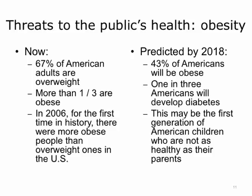Obesity is soon climbing to be a close second. Currently, 67 percent of American adults are overweight. More than one-third are obese. In 2006, for the first time in history there were more obese people than overweight people in the United States. Predicted by 2018, if nothing has changed, 43 percent of Americans will become obese. One in three Americans will develop diabetes, and this may be the first generation of American children who are not as healthy as their parents.